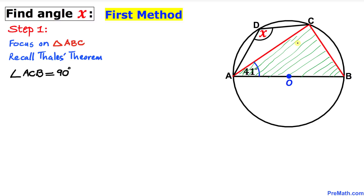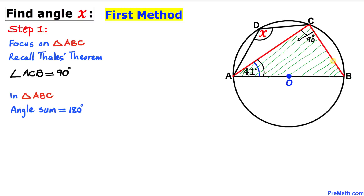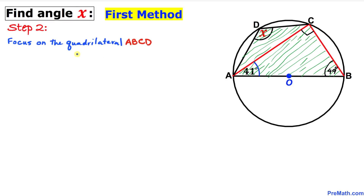Therefore, in triangle ABC, angle ACB is 90 degrees. Now, since the sum of angles in a triangle is 180 degrees, and we know angle BAC is 41 degrees and angle ABC is 90 degrees, angle ACB turns out to be 49 degrees.